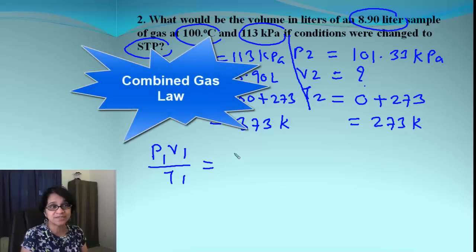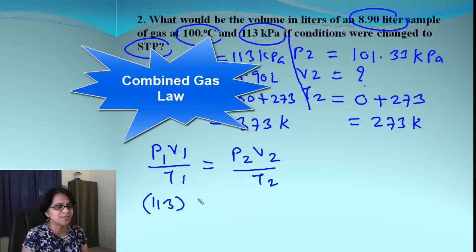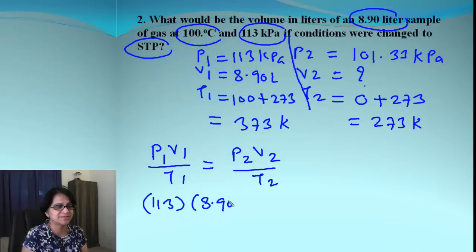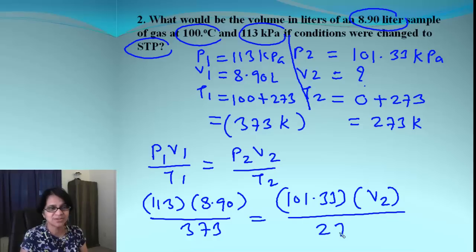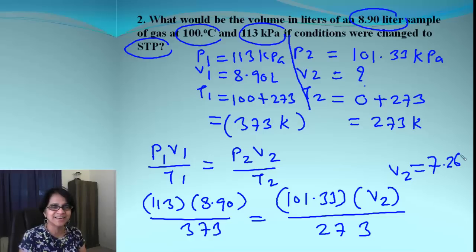Remember again, the number of moles we are going to consider, they are same. So let me plug these values. Pressure P1 is 113 times the volume is 8.90 divided by, make sure you put the temperature in Kelvin, 373 and over here pressure is 101.33. Volume is unknown. You can put that V2 or you can use X and divide it by 273. When we solve for this, volume V2 is equal to 7.26 liters.